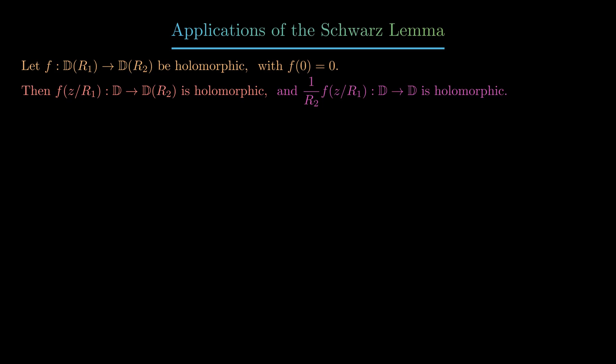Now of course the origin is still mapped to itself, so we can apply the Schwarz lemma to say that this map is distance decreasing. In particular, if we flesh out the algebra, what we end up with is that the absolute value of f(z) is less than or equal to the ratio of r2 over r1 times the absolute value of z.